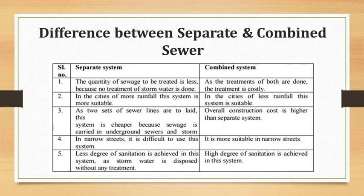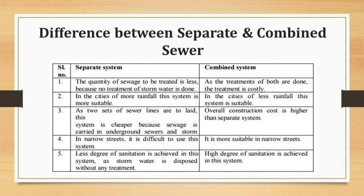These are the different points used to differentiate between the separate system and combined system, including cost consideration, choking problems, ventilation, foul smell, financial aspect, sub-soil condition, space consideration, and degree of sanitation. The separate system achieves the least degree of sanitation while the combined system achieves a high degree of sanitation.